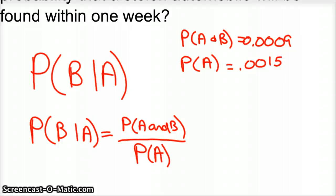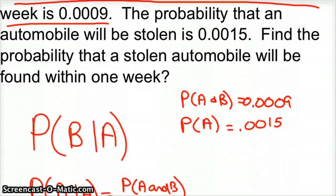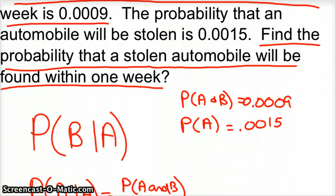So back here, at first when I read this, I didn't see it as conditional probability. But, you know, this last sentence, if we reread that, it says find the probability that a stolen automobile will be found within one week. So the wording was kind of tough for me,